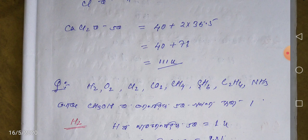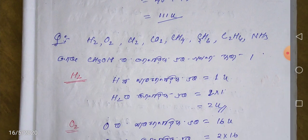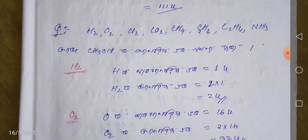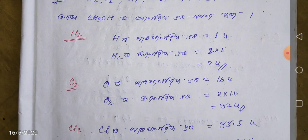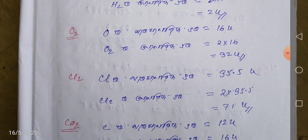I have a list of formulas: H2O, H2O2, CO2, CH4, C2H6, C2H4, NH3, CH3OH. Oxygen is 2 U, so oxygen is 2 into 16 equals 32 U. Then chlorine is 35.5 U, and CO is 72 U.